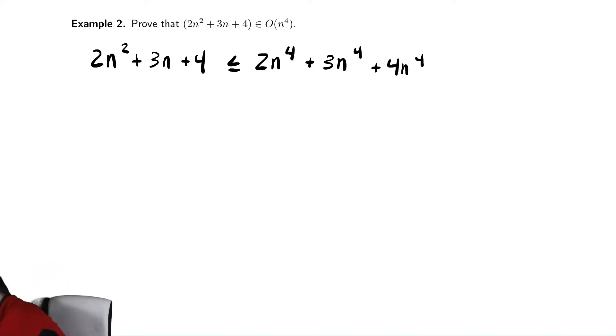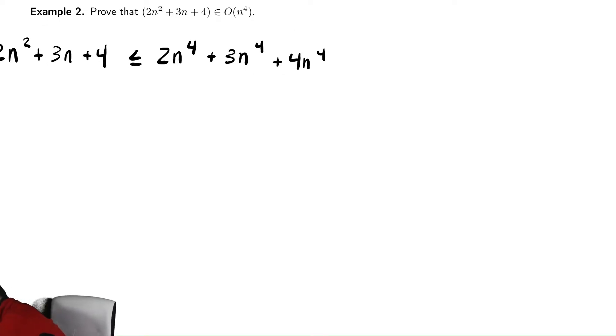However, that might not always be true. So just like before, off to the side, let's write down what we're assuming. We're going to show 2n squared less than or equal to 2n to the fourth. If I divide by 2n squared, I get 1 less than or equal to n squared. We had that exact inequality before. That means n greater than or equal to 1.